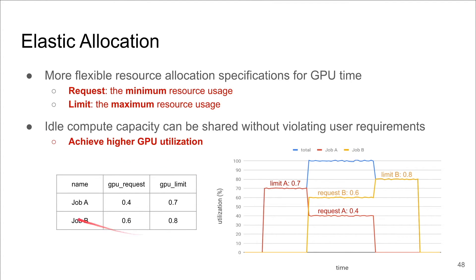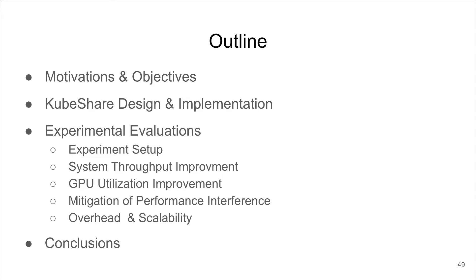To maximize GPU utilization under workload variation, KubeShare provides elastic allocation, allowing users to specify resource usage requirements by a range bounded between request and limit. For instance, with job A having request 40% and limit 70%, and job B having request 20% and limit 80%: initially only job A runs and can use up to its limit of 70%. After job B arrives, capacity is shared with minimum request guarantees, so job A reduces usage from 70% to 40%. Once job A leaves, job B can increase its usage to 80%. Elastic allocation guarantees user requests while maximizing GPU utilization.